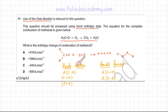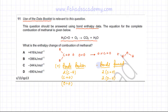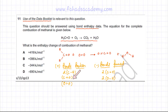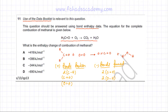Remember that bond breaking is endothermic, so the energies for bonds broken have a positive sign. Bond formation is exothermic, so that would have a negative sign. The formula for enthalpy change is bonds broken minus bonds formed. We need to refer to the data booklet and find the energies of all these bonds — the energy changes involved during bond breaking and bond formation.